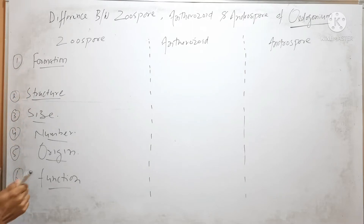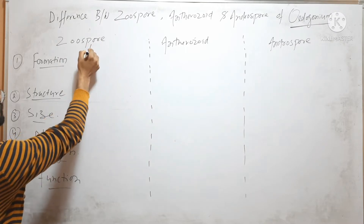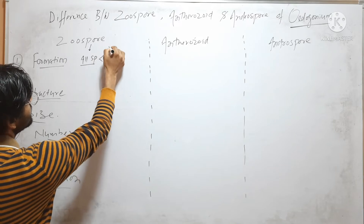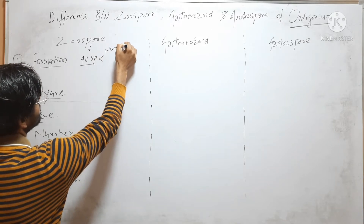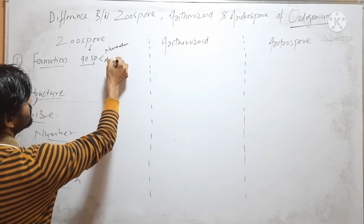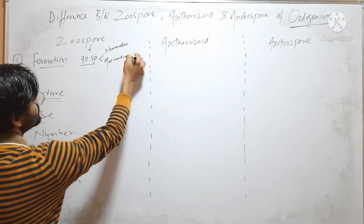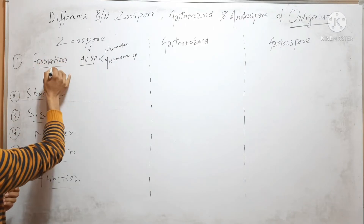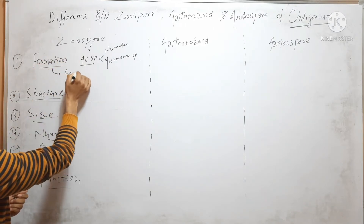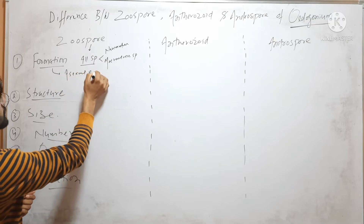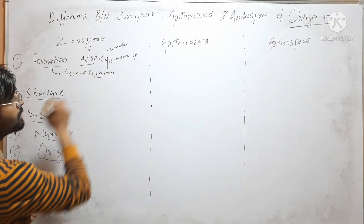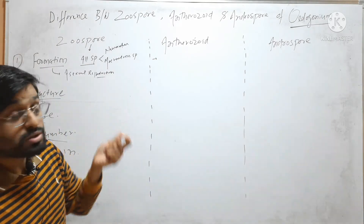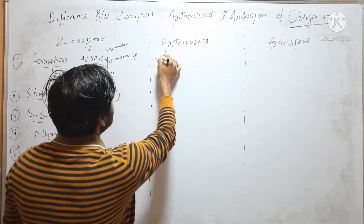The first parameter is Formation. Zoospore is formed in all species — that means in Nanoandrous as well as Macroandrous species. In both species, Zoospore is formed, and we know that Zoospore is formed during Asexual Reproduction. Antherozoid is also formed in all species.